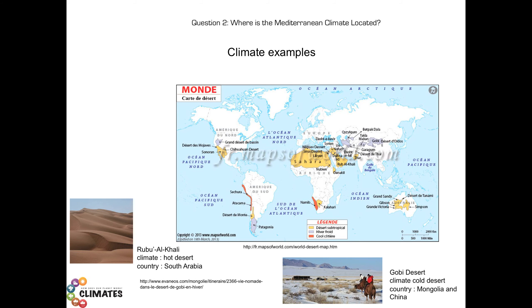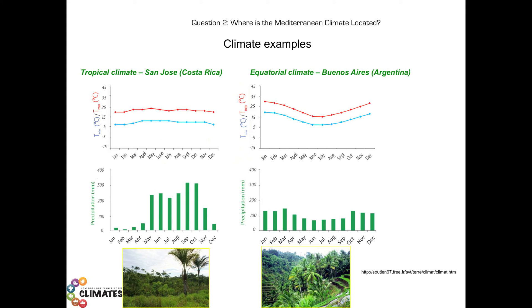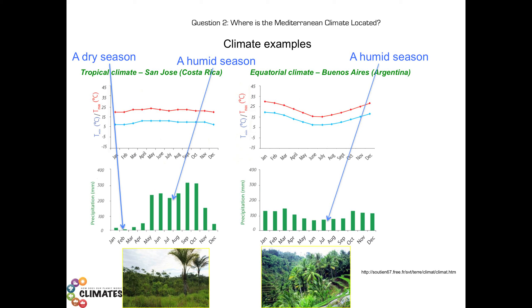If we look at two other climates — the tropical climate and the equatorial climate — these are two hot climates with maximum temperatures over 15 degrees Celsius throughout the year. But there are differences in their precipitation quantities. Under the tropical climate, we can identify a dry season and a humid season. Under the equatorial climate, heavy rain occurs during the whole year, so there is no dry season.